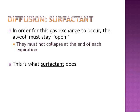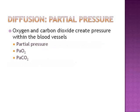Surfactant is crucial in all of that. In order for gas exchange to occur, the alveoli must stay open — they must not collapse at the end of each expiration, and that's what surfactant actually does. Because there is no direct way to measure the concentration of these gases in the blood, we measure their partial pressures. Oxygen and carbon dioxide create pressure within the blood vessels. The partial pressure of oxygen within the arterial blood is PaO2, and PaCO2 is the partial pressure of carbon dioxide within the arterial blood.